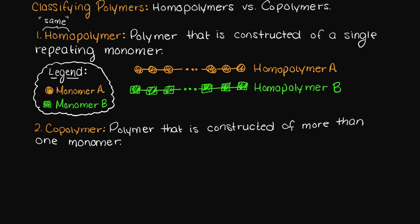Now copolymers are certainly more diverse than homopolymers as we can have tons of different configurations. Let's go through some now so that you have an idea of how diverse copolymers can actually get. Let's write down our legend again.